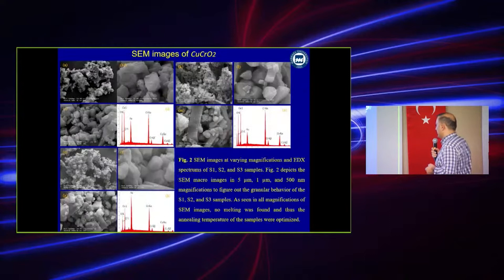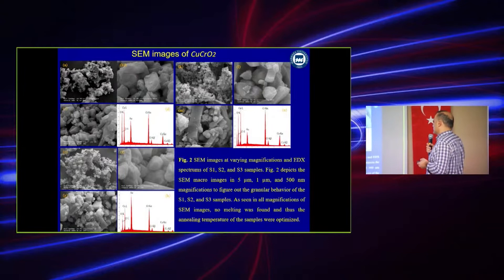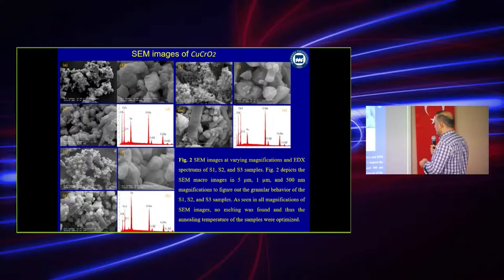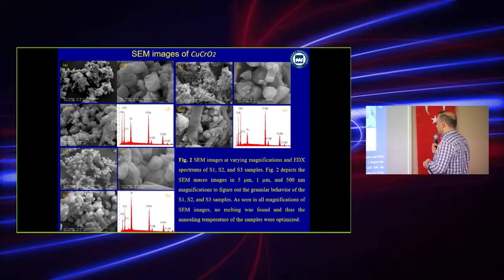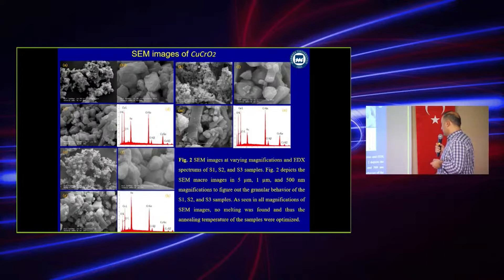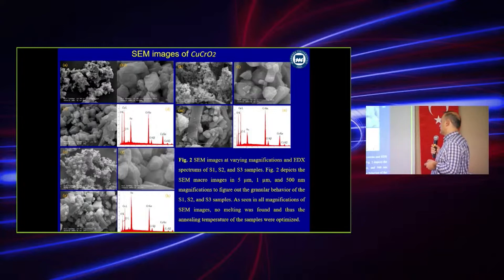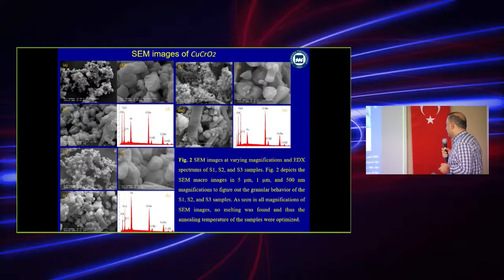The SEM images of the copper chromium oxide. You see on the figures both at the left hand side, right hand side, and the down bottom. These are all given for S1, S2, and S3 samples. Also we conducted the EDX measurement of the samples. The SEM micrometer images in 5 micrometer and 50 to 500 nanometer magnifications.